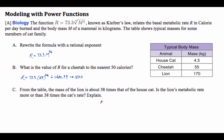From the table, the lion is about 38 times the amount of the house cat, from 4.5 times 38, it's about 170. So, is the lion's metabolic rate 38 times the cat's rate?